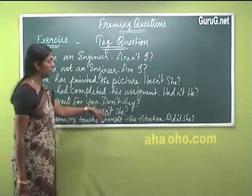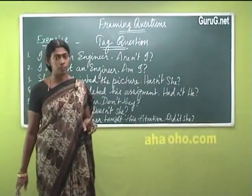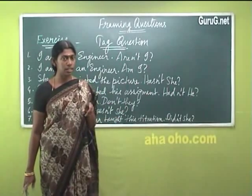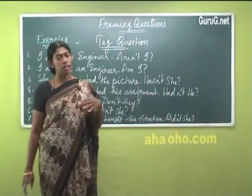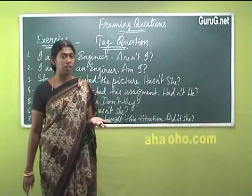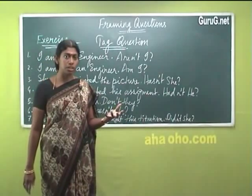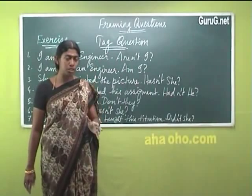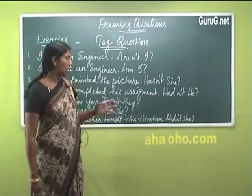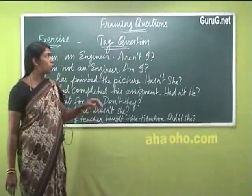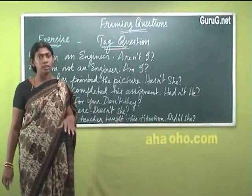'Our chemistry teacher taught this titration, didn't she?' — 'taught' is simple past tense; did + teach gives 'taught.' The tag takes the negative form of 'did,' which is 'didn't.' In simple past and simple present tense sentences, the implied presence of do, does, or did must be checked. Also check whether the sentence is positive or negative: if one is negative the other must be positive. Use the same verb form in the tag — either as 'hadn't' or 'had' — accordingly.